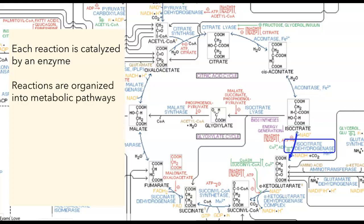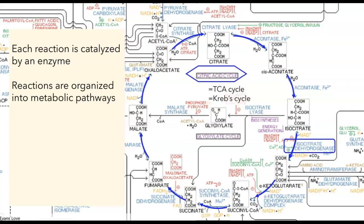While we could look at individual reactions on their own — such as how isocitrate gets converted into alpha-ketoglutarate — in cells, reactions are organized into metabolic pathways. This particular reaction is part of a bigger metabolic pathway: a series of eight reactions collectively called the citric acid cycle, also known as the tricarboxylic acid cycle or the Krebs cycle. It's really a central reaction in cellular metabolism.